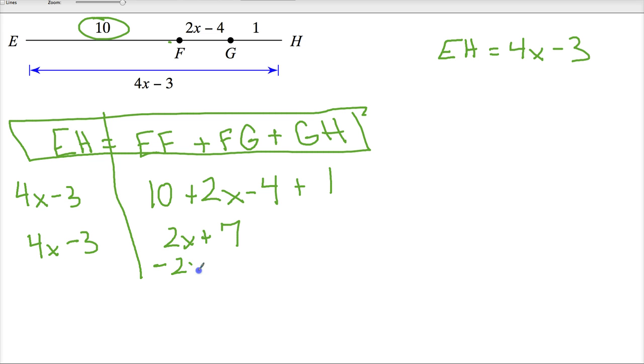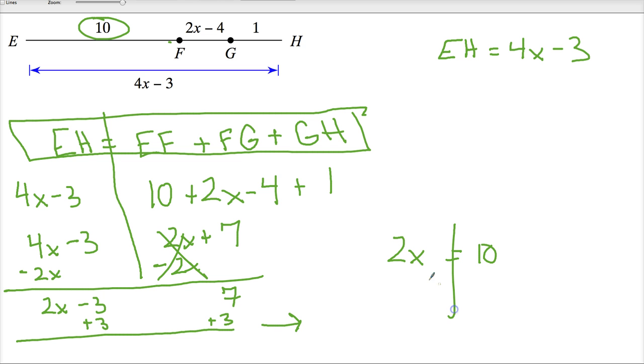4x minus 3. So from here, I'm just getting x all on one side or my variable, whatever it happens to be. In this case, it's x. So 2x, to get rid of minus 3, I'm going to add 3. I end up with 2x equals 10, divide by 2, and x is equal to 5.